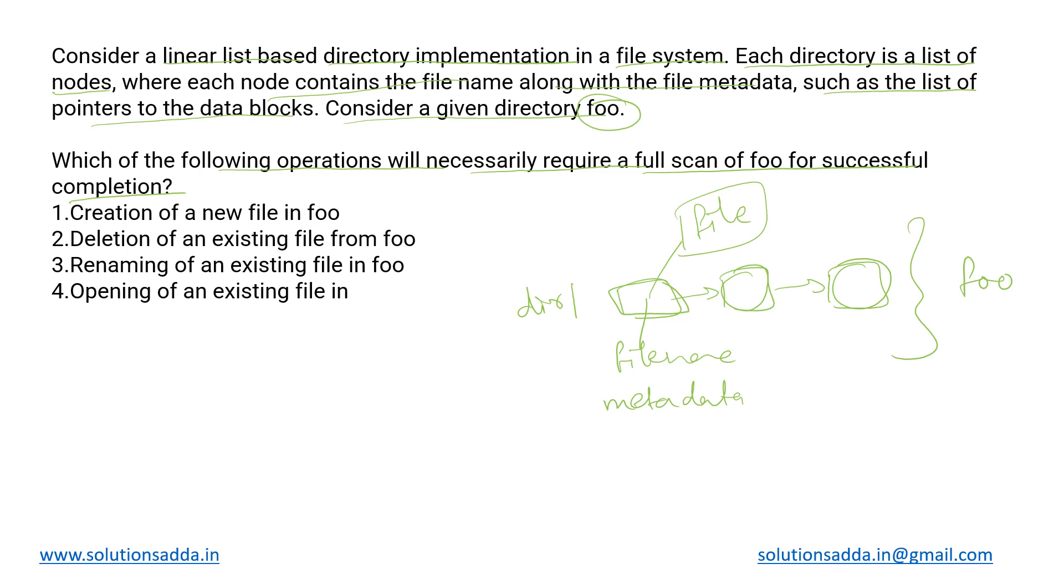This foo is a directory that is arranged in the form of a list of nodes like this. It is kind of a linked list data structure and every node is having the name of the file along with the metadata including pointer to the actual file location. This is how our foo looks like.